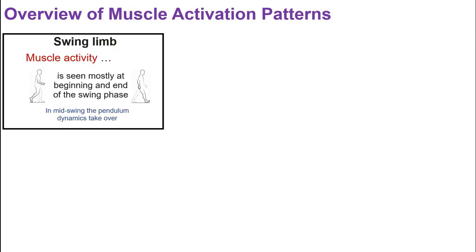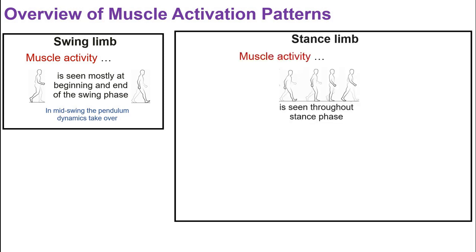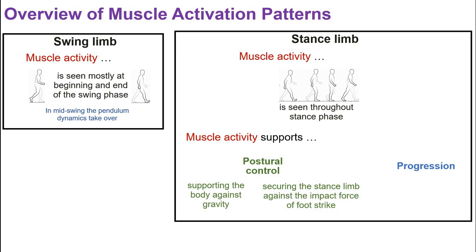When we look at the swing limb, muscle activity is mostly seen at the beginning and the end of the swing phase. This is related to the fact that in mid-swing, it's possible for the pendular dynamics of the limb to be used to move the limb. When we look at the stance limb, muscle activity is seen throughout the stance phase. The function of this muscle activity is to support both postural control and progression. Subfunctions related to postural control include supporting the body against gravity and stabilizing the stance limb against the impact of foot strike. The function of progression is to generate the forces needed to move the body through the environment.